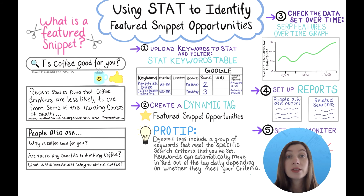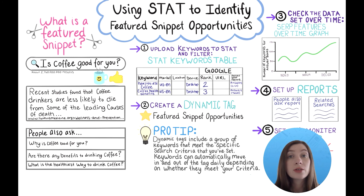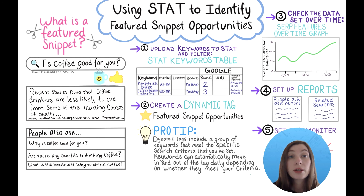It's worth taking a look at the related searches report as well to see related search queries offered by Google, which users may also be searching. Once you've identified long tail keywords you want to track and keep an eye on, you can copy and paste those keywords into Google Keyword Planner or even back into STAT. That way you can see what the rankings, search volume, and CPC look like. You can use one of those smart dynamic tags in STAT to group and label them up again as you start optimising on the keywords you think will be valuable to your site.